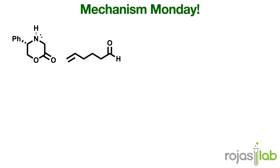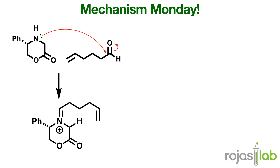This reaction begins with imine formation, which is common anytime you have an aldehyde and a nitrogen-based nucleophile. And since we don't have a reductant like sodium cyanoborohydride, this actually stops at the iminium ion, which I have a video for that you can check out on screen.